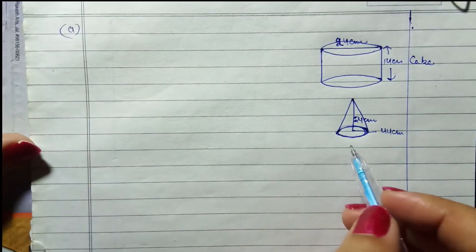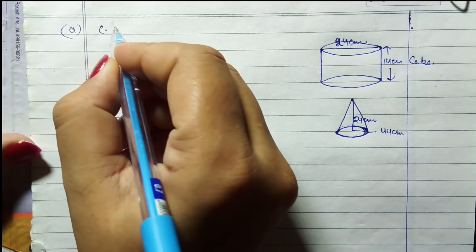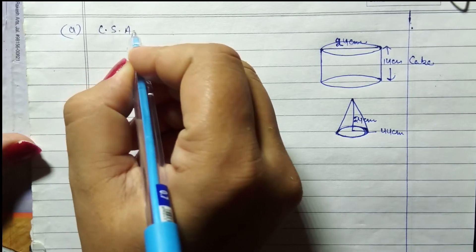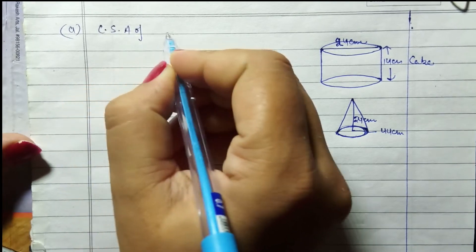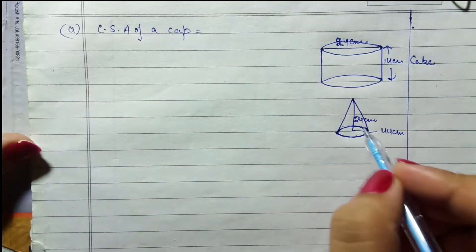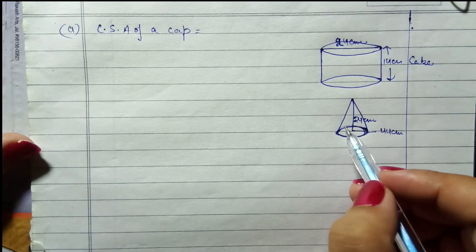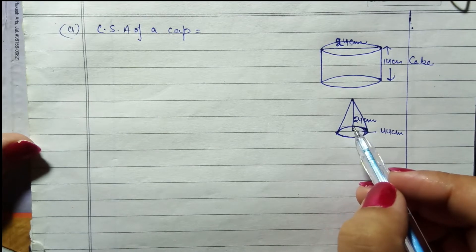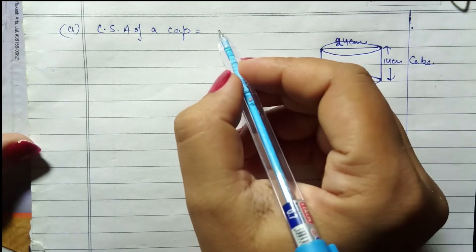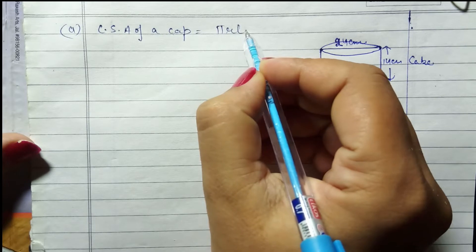A ke answer ke liye sabse pahle likhenge: curved surface area of a cap. Cap conical hai, toh cone ka curved surface area kya hota hai? πrl.